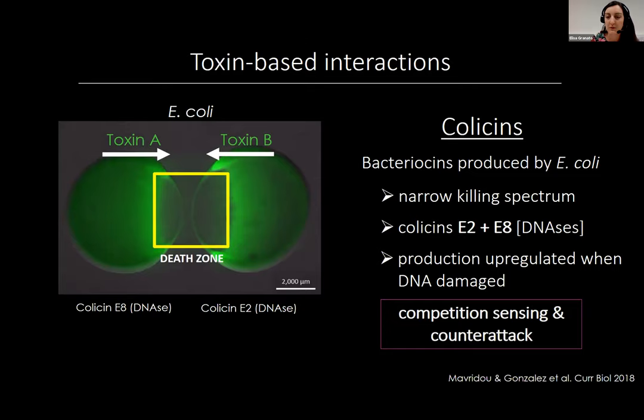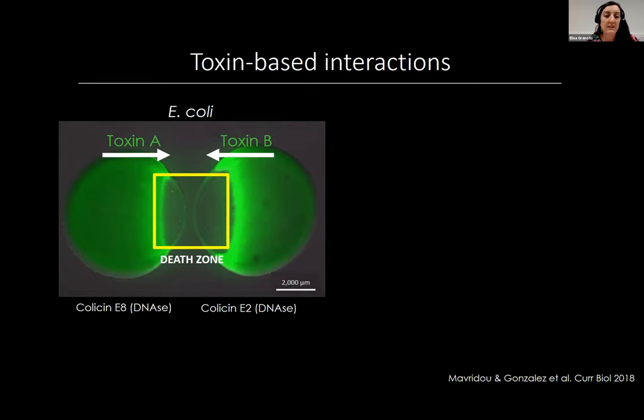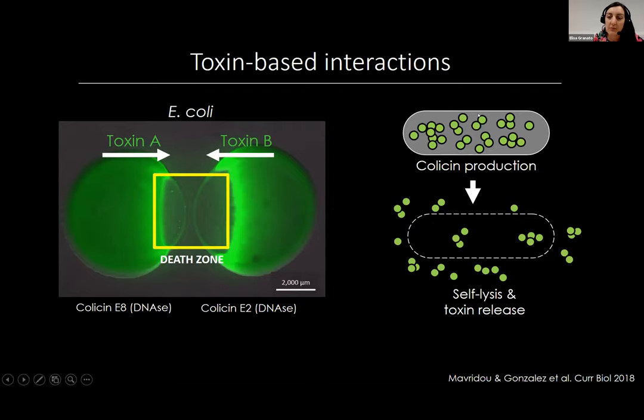Looking at this death zone in the middle, it's straightforward to think that they just killed each other since they're producing two different toxins. But it's actually not that simple, because these colicin toxins are released by cell suicide. The cells spend time producing colicins, accumulate them in their cytoplasm, and then at some point they flip a switch — they permeabilize their own membrane, lyse themselves, and all of the colicin toxins they produced get released into the environment at the same time. It's a suicidal way of releasing toxins.